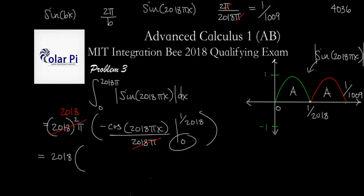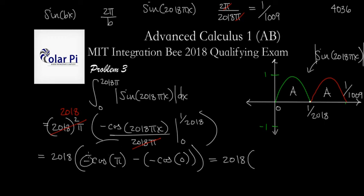Negative cosine of 2018π times 1 over 2018 is just going to be π inside of cosine. And then we'll have minus and then negative cosine of 2018π times 0 is just 0. This is going to equal 2018 times negative cosine of π is negative 1. So we have 1 right there. And then the minus minus is going to be plus and cosine of 0 is 1. So we have 1 plus 1. This is 2018 times 2, which is, in fact, 4036. I hope you enjoyed this and keep watching.